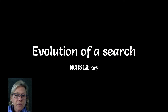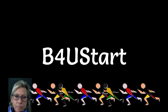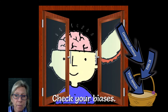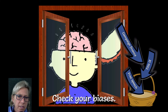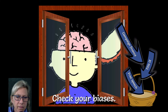This is Evolution of a Search, and today we are going to do Chapter 1: Check Your Bias. Before you start, you really need to check your bias at the door. Very often, students come to this process thinking they already know what they want to say, so they're already thinking ahead to their thesis and topic sentences. You cannot do that — it defeats the purpose of doing research.